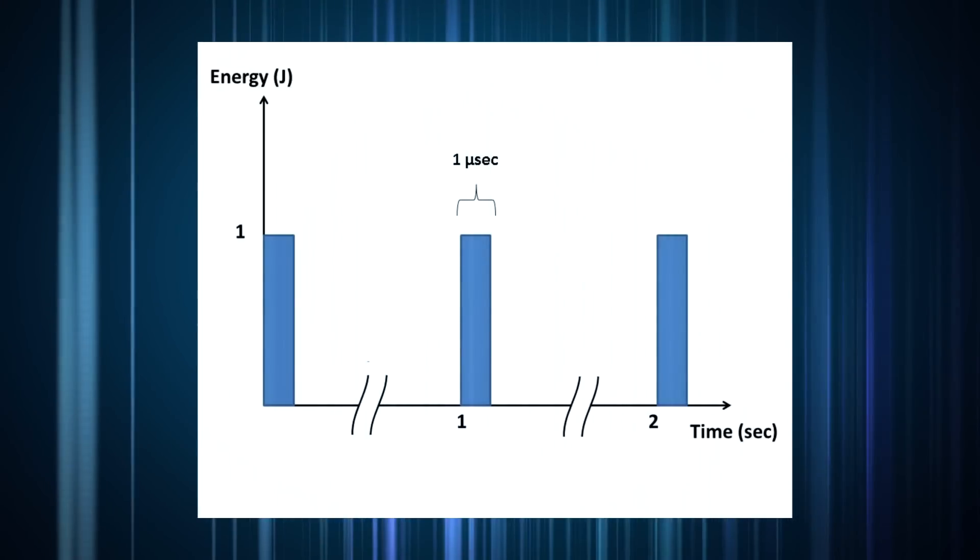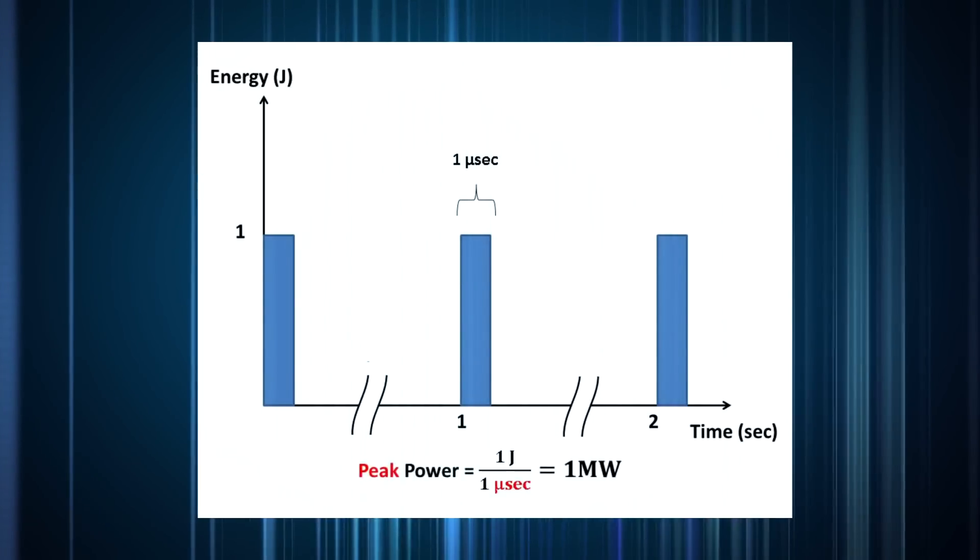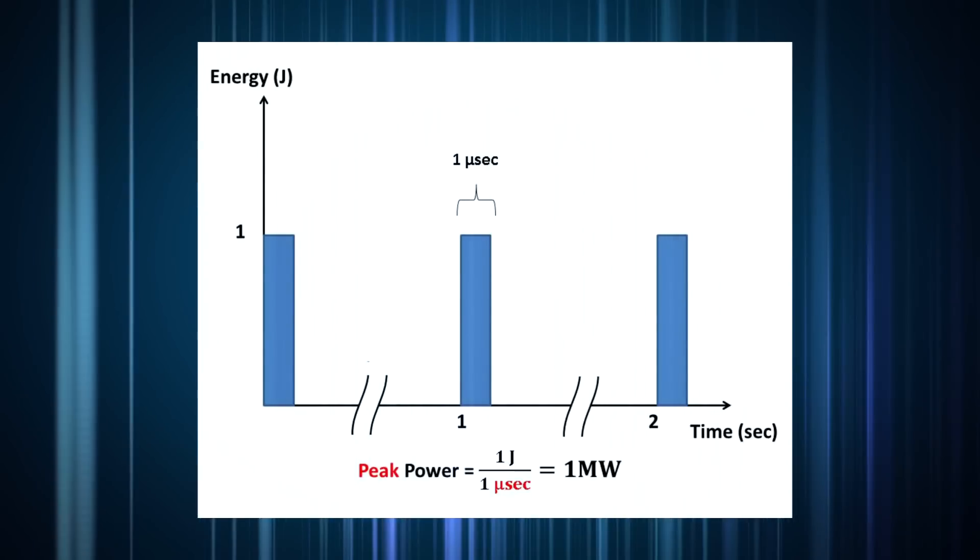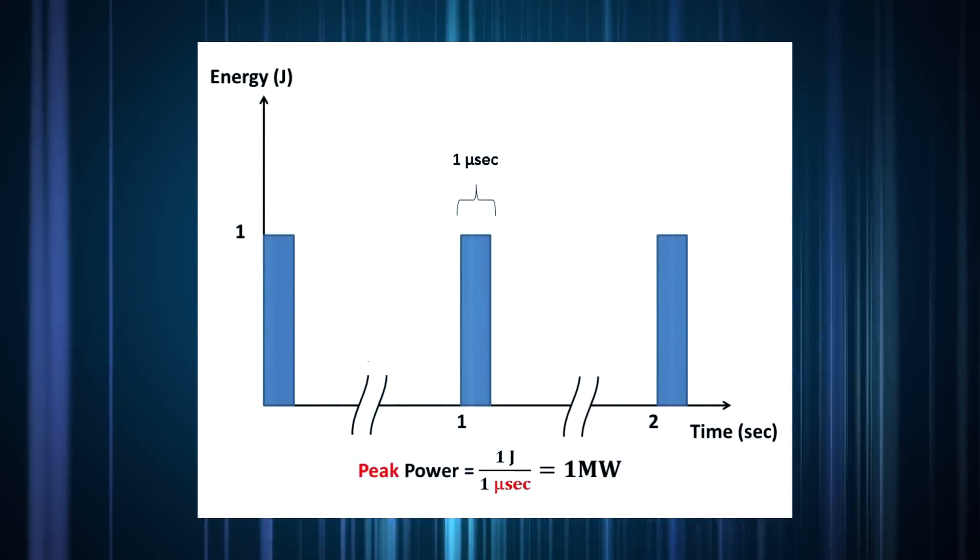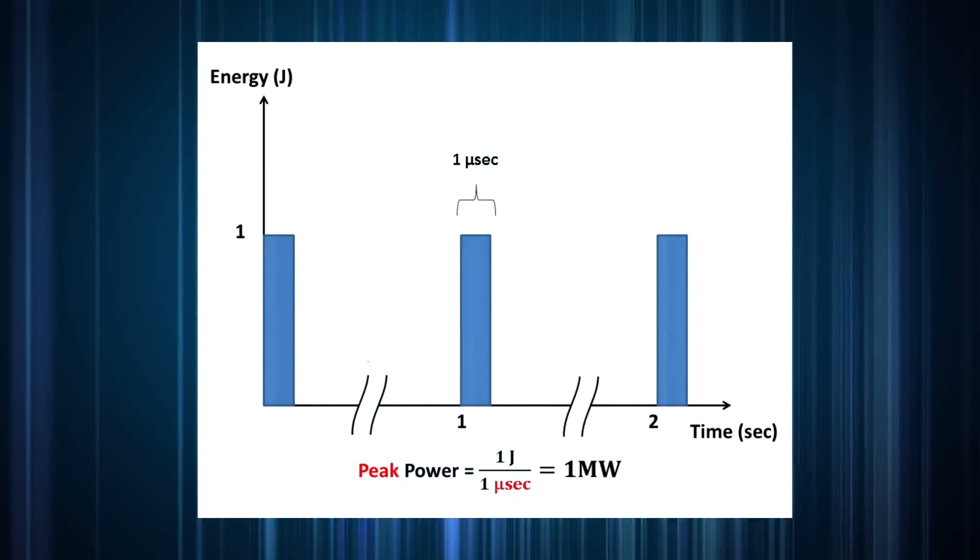But, if the pulses are one microsecond wide, the peak power, the power during the course of a pulse, is one joule divided by one microsecond, or one megawatt. One watt, one megawatt. Big difference.